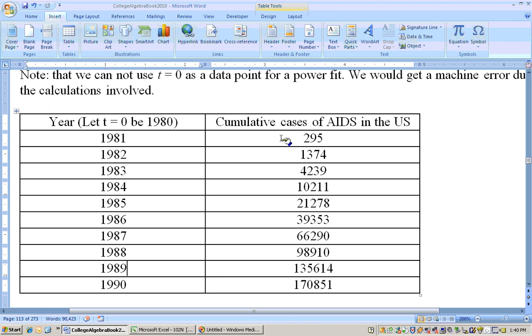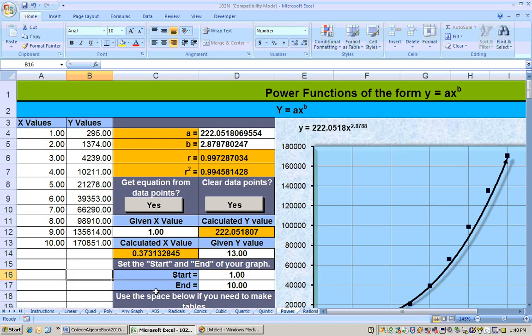And what I actually did is copied and pasted this data right here over just the y area, and then once I got that in, I typed in my years one through ten.